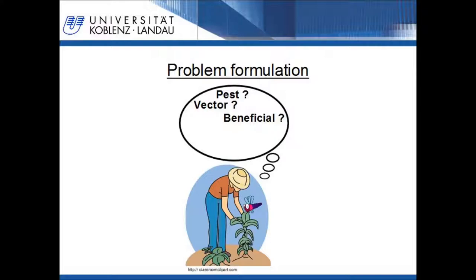Let's imagine the following situation. A farmer detects an insect on his field. To know if countermeasures are necessary, it is important for him to know to which group the insect belongs to. It might be a pest, a vector, or beneficial. Dependent on the function of the insect, it might be necessary to fight the pest, or to be aware of vector transmitted diseases, or to do nothing and to be glad about having a beneficial on his field. For the farmer, it is important to know to which species the insect belongs to, to initiate appropriate countermeasures if necessary.